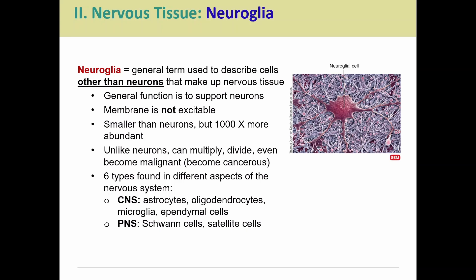The neuroglia are basically all of the other cells that are not neurons in the nervous tissue. They are not going to be sending out signals — they're not what we call excitable. So they're not going to be conducting any sort of signaling or action potentials. They don't have the same job as a neuron. Their job is to support the neurons, and they can do that in a variety of ways. Even though they're not the ones actually sending nervous impulses, they're still vitally important. Without these guys, the neurons would not be able to function.